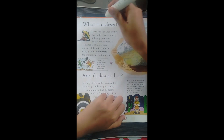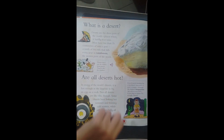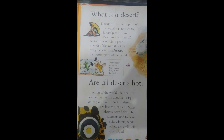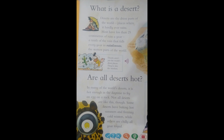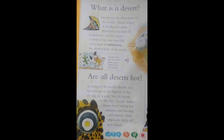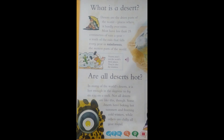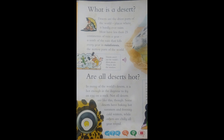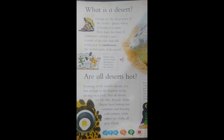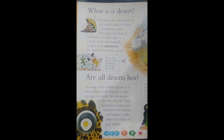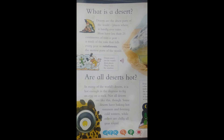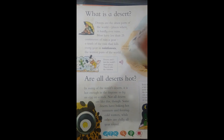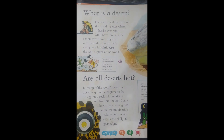Deserts are the driest parts of the world — places where it hardly ever rains. Most have less than 25 centimeters of rain a year, a tenth of the rain that falls every year in rainforests, the wettest parts of the world.